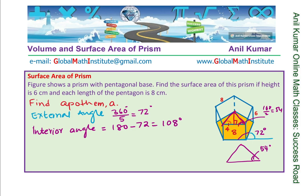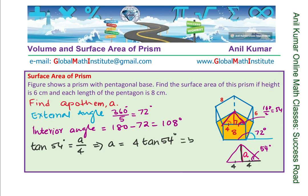That 54-degree angle will help us find the apothem A. We know each half-side is 4 units. We can use tan theta: the tangent ratio of 54 degrees is opposite side A over the adjacent side 4. That gives the value of apothem A as 4 times tan(54°). Using a calculator, 4 times tan(54°) gives us a value of 5.5.